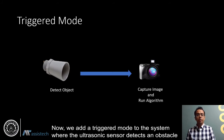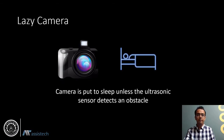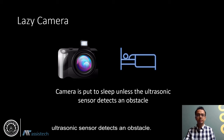We add a triggered mode to the system where the ultrasonic sensor detects an obstacle and then signals the camera to acquire an image and run the algorithm to find out the type of the object. We also add a lazy camera mode where the camera is put to sleep unless the ultrasonic sensor detects an obstacle.